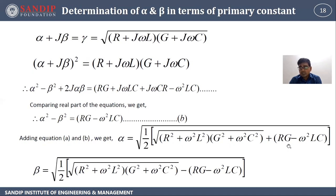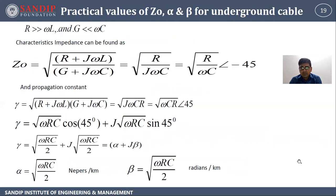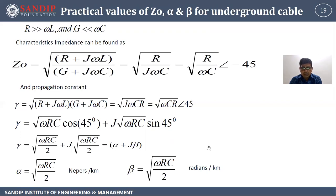Special case: if R >> ωL and G << ωC, then Z₀ = √(R/ωC) at angle −45°, and propagation constant gamma = √(ωRC) at angle 45°. So gamma = √(ωRC/2) + j√(ωRC/2) = α + jβ. Therefore α = √(ωRC/2) nepers per kilometer and β = √(ωRC/2) radians per kilometer.